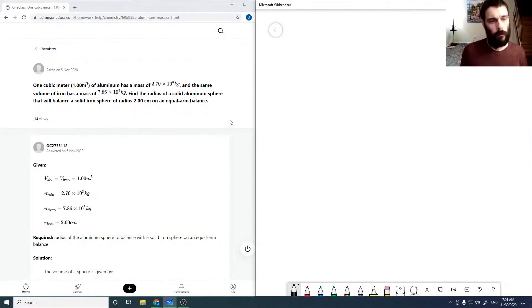Okay, one cubic meter of aluminum has a mass of 2.70 times 10 to the 3, the same volume of iron. So we're really given two densities here.